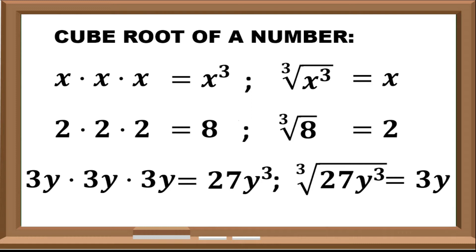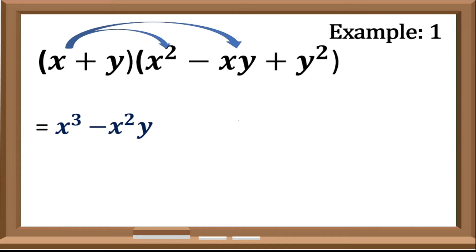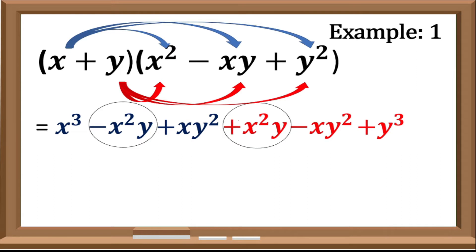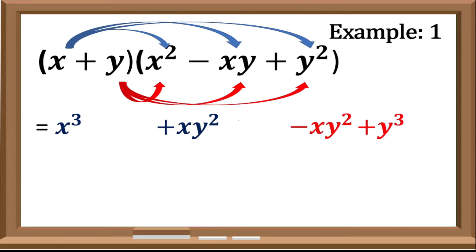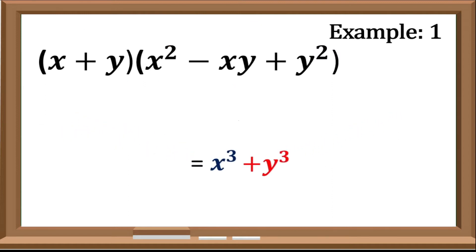Aside from the cube root of a number, we need to understand also the concept of multiplying a binomial to a polynomial. Let us take this as an example. We have the quantity of x plus y, times the quantity of x squared minus xy plus y squared. Using the distributive property, we have x cube minus x squared y plus xy squared plus x squared y minus xy squared plus y cube. As you can observe, there are terms that are the same but with different signs, so we can cancel them out. Negative x squared y and positive x squared y cancel out, as well as positive xy squared and negative xy squared. So the remaining product is x cube plus y cube.